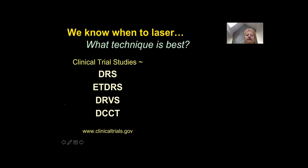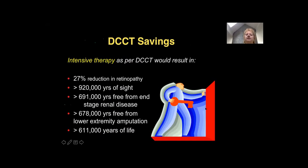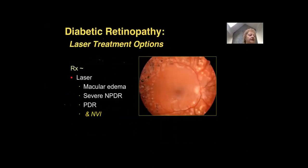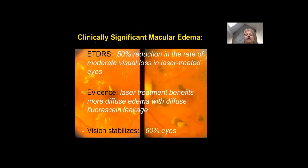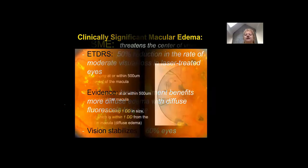There's a huge economic benefit to treating diabetic retinopathy, which saves many years of sight for patients. Treating diabetes efficiently reduces the number who progress to severe renal disease or lower extremity amputation and extends their lifespan. We know that based on clinical trials there's a significant reduction in the rate of moderate visual loss in laser-treated eyes, and that vision can be stabilized in at least 60% of eyes.